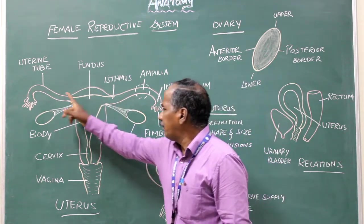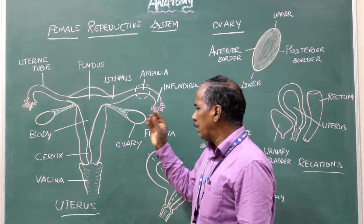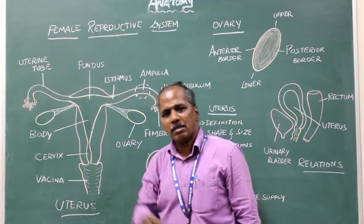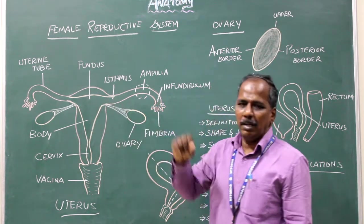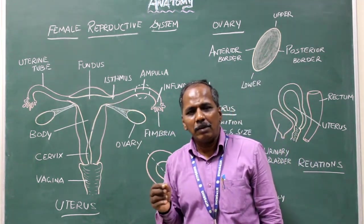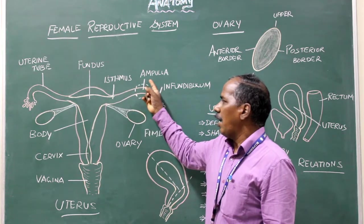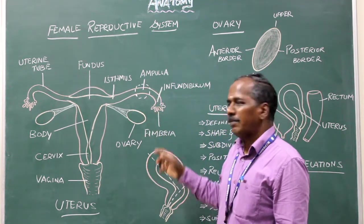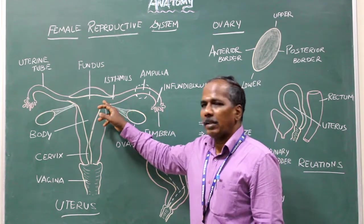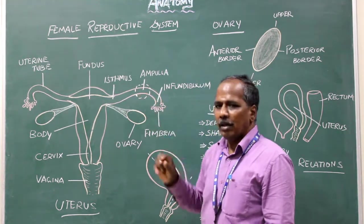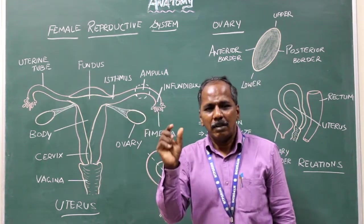Uterine tube: it is a pair of ducts or tubular structures which transmit the ovum from the ovary to the uterus. It has two ends — a median end and a lateral end. It is about 10 cm long and consists of isthmus, ampulla, infundibulum, and fimbriae. The isthmus is the point where the uterine tube is connected to the uterus. The ampulla is the dilated part of the uterine tube and is the common site of fertilization.